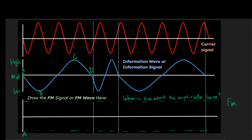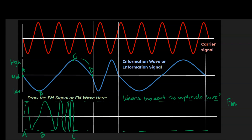Going from A to B, we go from a medium amount to a low amount — that means a relatively higher frequency going to a relatively lower frequency as we go from A to B. Then going from B to C, we go from a relatively low frequency or greater wavelength to a higher frequency — it's a rather abrupt change, so it looks something like that. Going from C to D, this goes from a relatively high amount to a relatively low amount, so we stretch it out a bit.